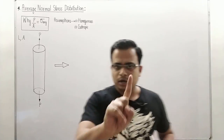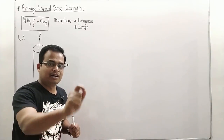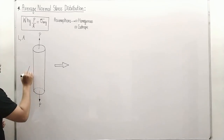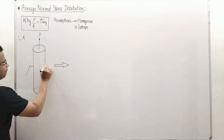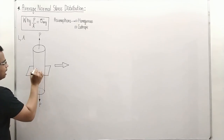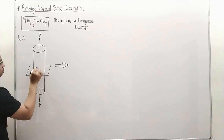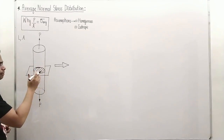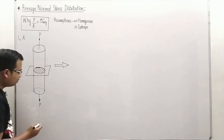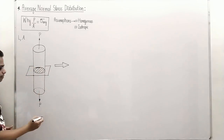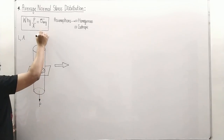Let's try to analyze this. What I'm going to do is cut this with respect to a plane. When I do that, I'll have a cross-section over here. Now let's try to analyze this cross-section — what's happening inside. This cylindrical rod is acted upon by external loads.